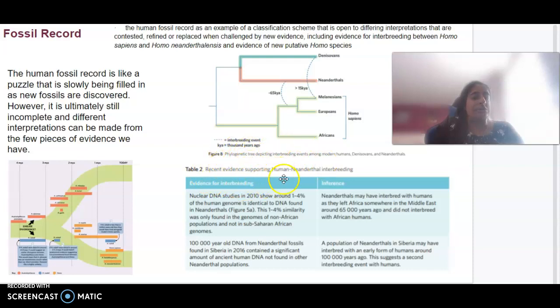There is evidence to support human and Neanderthal interbreeding. Nuclear DNA studies have shown that the human genome is identical to DNA found in Neanderthals. The inference that can be made is that Neanderthals may have interbred with humans as they left Africa around 65,000 years ago and then didn't breed with African humans. 100,000-year-old DNA from Neanderthal fossils was found in Siberia. The interpretation made was that a population of those Neanderthals may have interbred with an early form of humans around 100,000 years ago. This could suggest a second interbreeding event with humans as well. From the evidence collected, we can make these inferences.